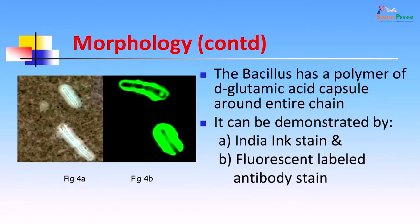The bacillus has a polymer of D-glutamic acid capsule around the entire chain. This can be demonstrated by India ink and fluorescent-labeled antibody. The India ink preparation shows the clear capsule around the full chain of the bacteria, and the fluorescent-labeled antibody stain confirms that the organism was Bacillus anthracis.